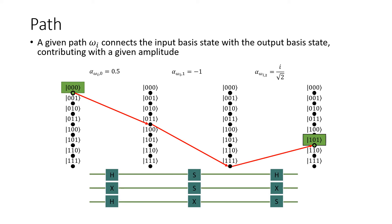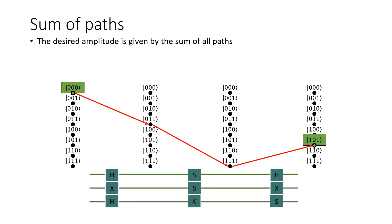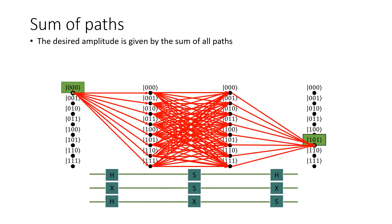Every layer contributes to an amplitude. The total path amplitude is given by the product of all layer amplitudes. The amplitude we want to find is given by the sum of all possible path amplitudes.